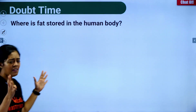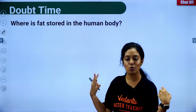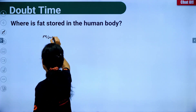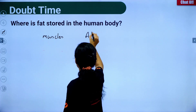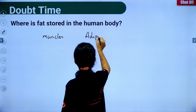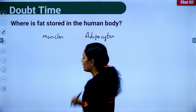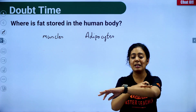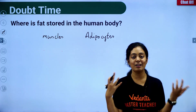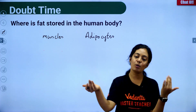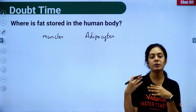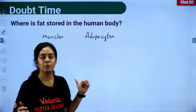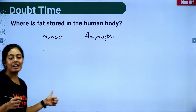Where is fat stored in the body? Fat is stored in two important places: your muscles and your adipocytes — cells of adipose tissue, present below your skin. This is why people get fatter when they eat more fats — fat deposits beneath the skin. Fat is also stored in your liver.